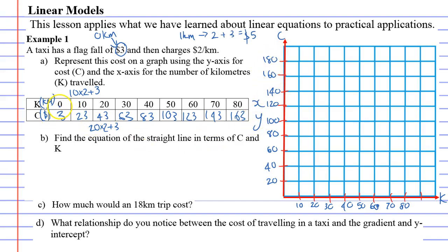When you've traveled 0 kilometers, it costs you $3. So 0 matches with 3, we'll just go slightly up. 10 matches with $23, 20 matches with $43, 30 matches with 63, 40 with 83, 50 with 103, 60 with 123, 70 with 143, and 80 with 163. And we can see that we're going to get a nice straight line here.